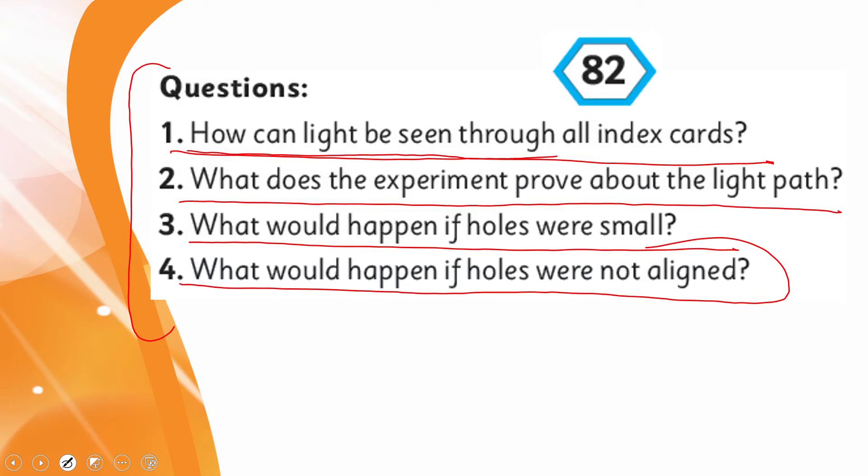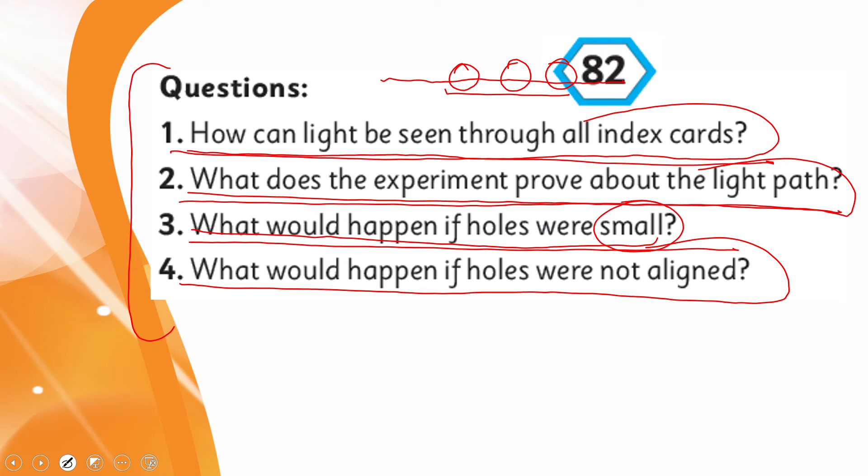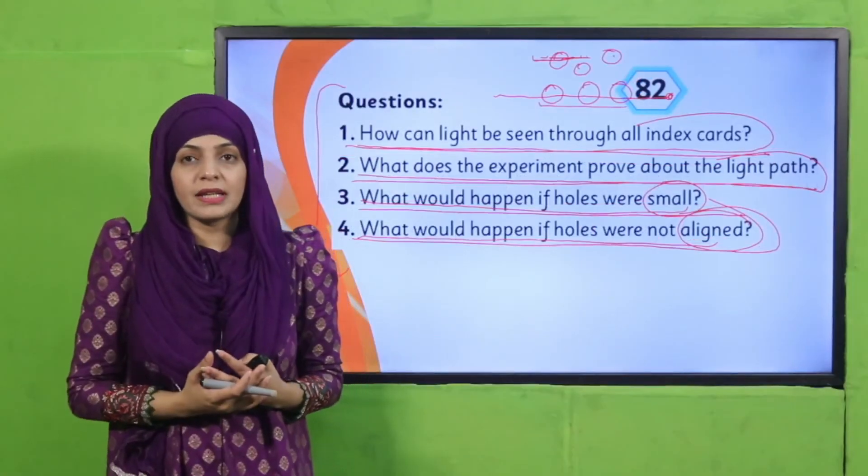In this way we can say that light is traveling in a straight line. How can light be seen through all index cards? Because all the holes were aligned in a straight line. What does the experiment prove about the light path? It proves that light is traveling in a straight line. What would happen if holes were small? The light would be blocked.